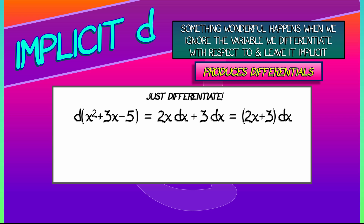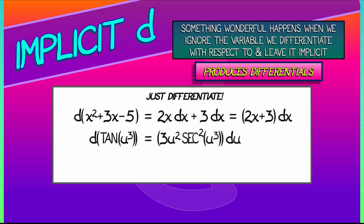But if we have a different variable — something like tangent of u cubed — we can differentiate that with the same implicit differentiation operator. What's the derivative of tangent u cubed? A little chain rule going on here: we get 3u squared times secant squared of u cubed, all of that times du. Again, if I had differentiated with respect to u — applied the operator d by du — everything would be cool.